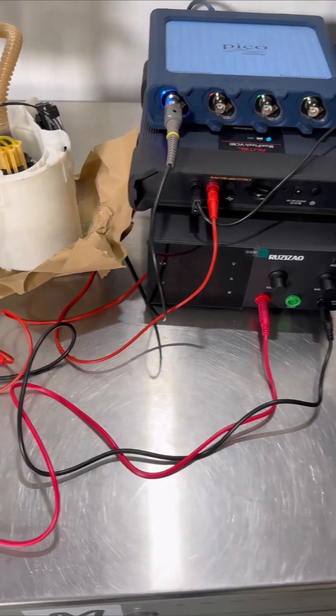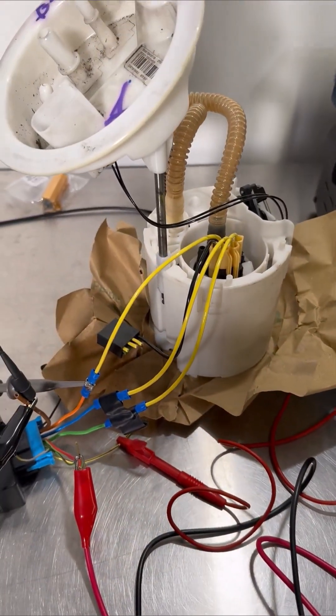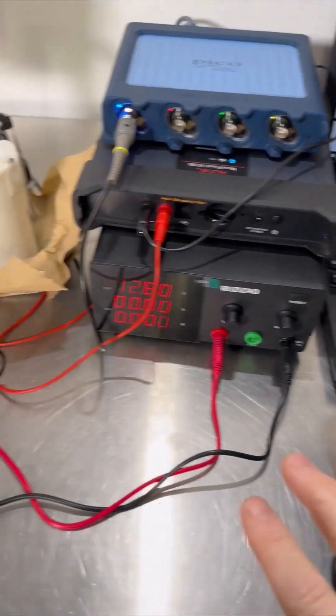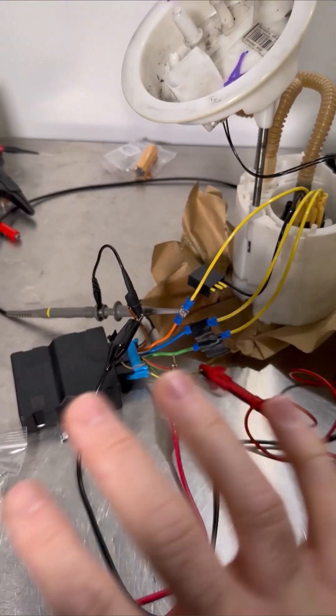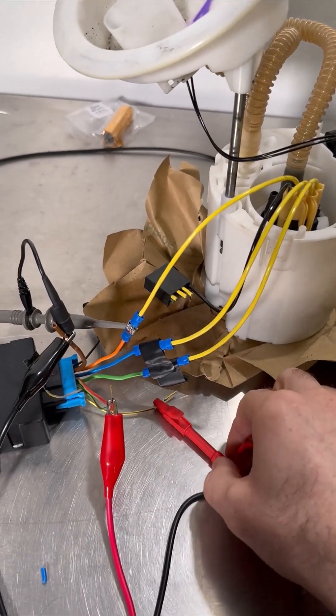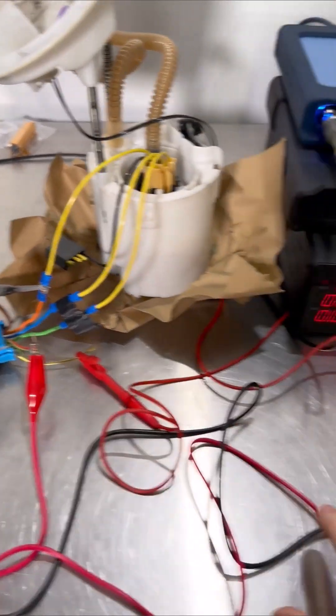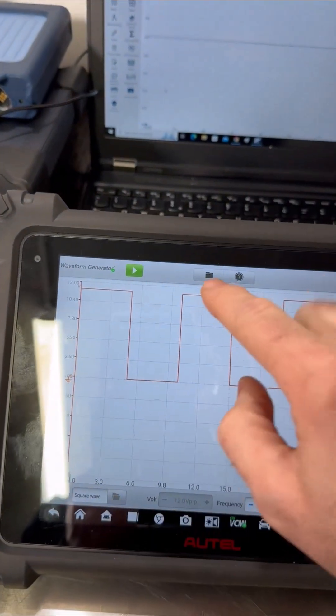So if we turn on the power supply you can hear that the pump briefly runs. That's like the priming cycle but now it stops. So what we need to do is excite the signal coming down here from the engine control module which we're actually using as this here.